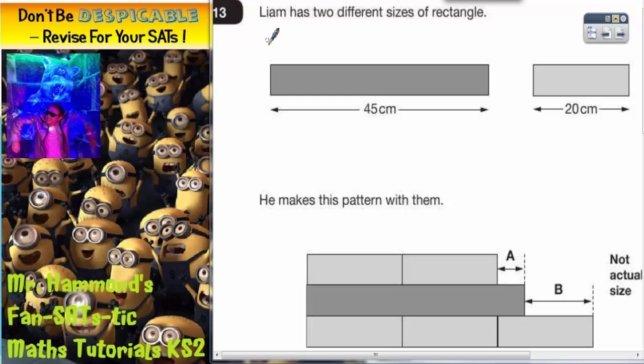Question 13. Liam has got two different sizes of rectangle. He's got a dark grey rectangle which is 45 centimeters long and he's got a light grey rectangle which is 20 centimeters long.